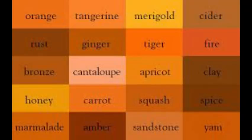Up next is orange. Its shades are: orange, tangerine, marigold, cedar, rust, ginger, tiger, fire, bronze, cantaloupe, apricot, clay, honey, carrots, squash, spice, marmalade, amber, sandstone, and yam.